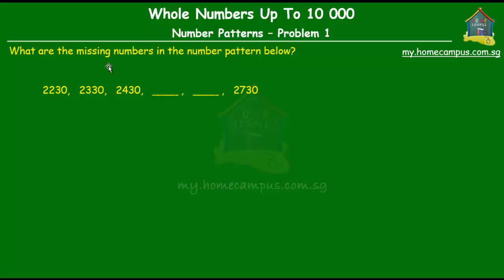The question is what are the missing numbers in the number pattern below? We have the numbers 2230, 2330, 2430 and then two blanks and then the last one that's 2730. So we have to find out what goes in the two missing blanks.